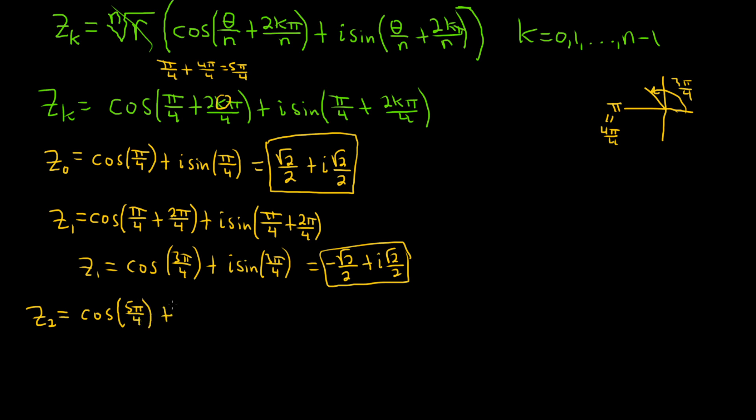plus i sine of 5 pi over 4. And 5 pi over 4 is here. So they're both negative in this case because the x is negative and the y is negative. So this is negative root 2 over 2 minus i root 2 over 2.